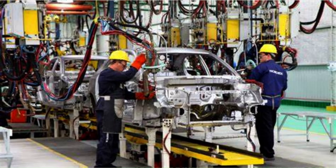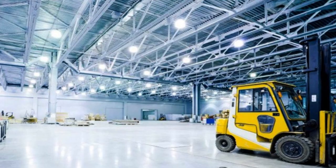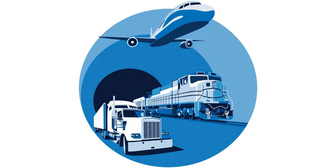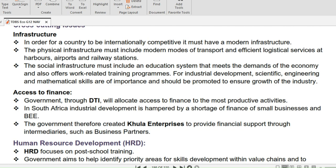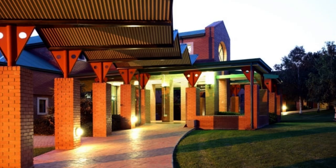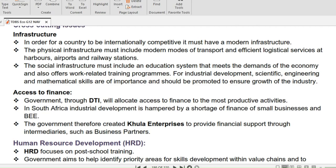In order for a country to be internationally competitive, it must have a modern infrastructure. The physical infrastructure must include modern modes of transport and efficient logistical services at harbors, airports, and railway stations. The social infrastructure must include an education system that meets the demands of the economy and offers work-related training programs. For industrial development, scientific, engineering and mathematical skills are of importance and should be promoted to ensure growth of the industry.